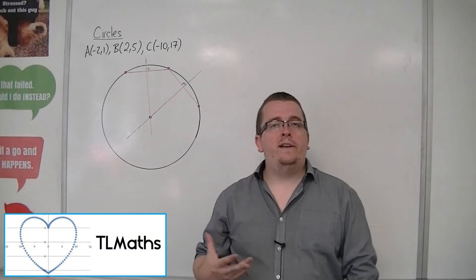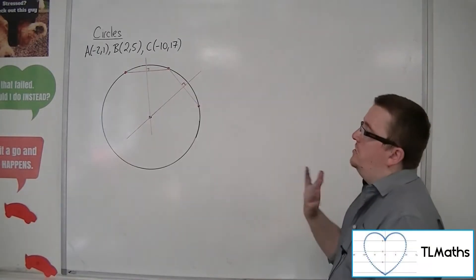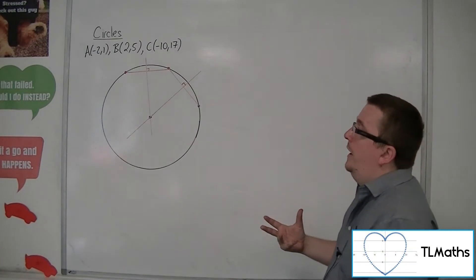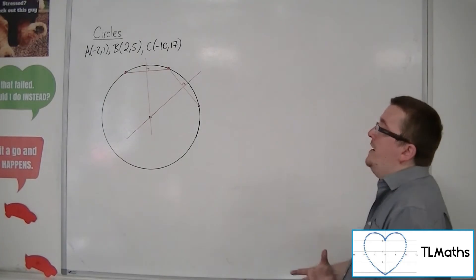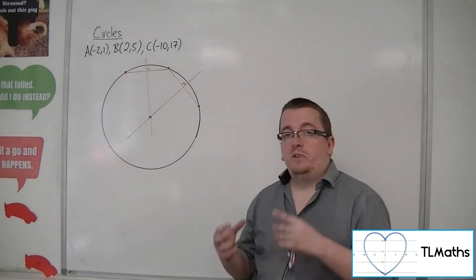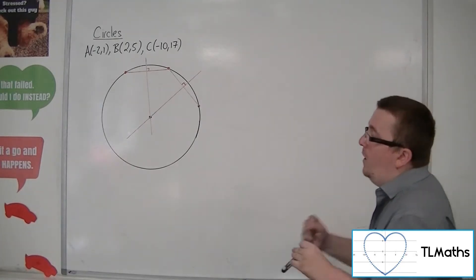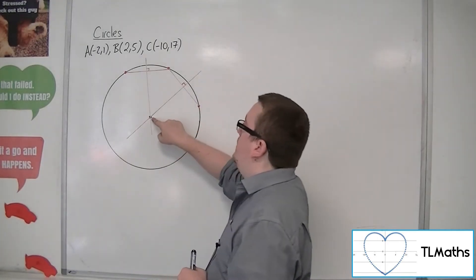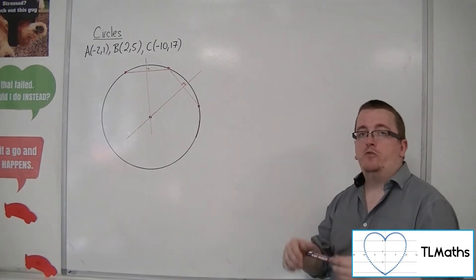In this video we're going to go through a slightly harder example to the one in the previous video — just slightly harder coordinates to work with. We've got three coordinates that we know lie on a circle, and I want to find the centre and radius of this circle and write down its equation. I'm going to pair up these coordinates, find the perpendicular bisectors, see where they intersect, and then use that coordinate to find the distance to any of the three points to get the radius.